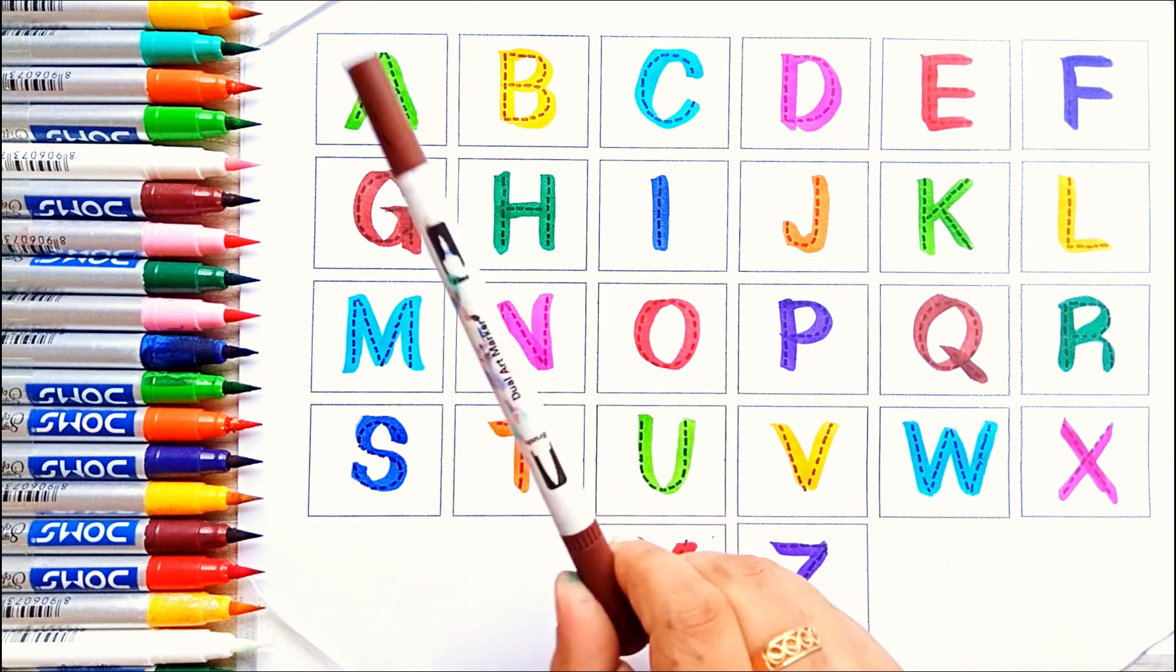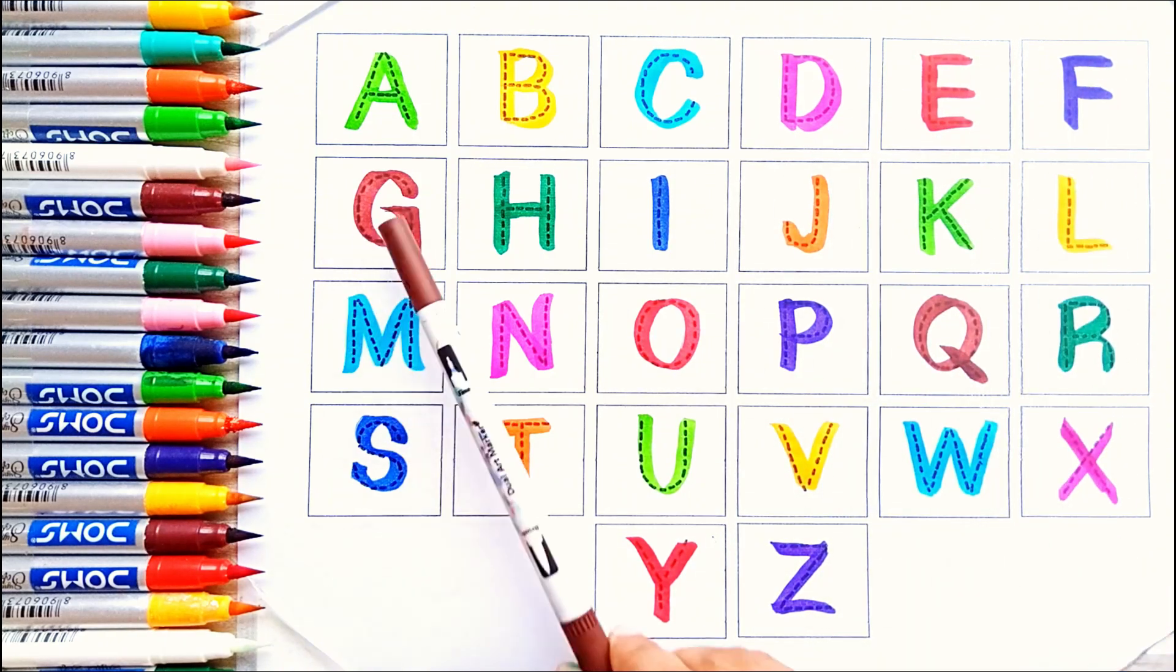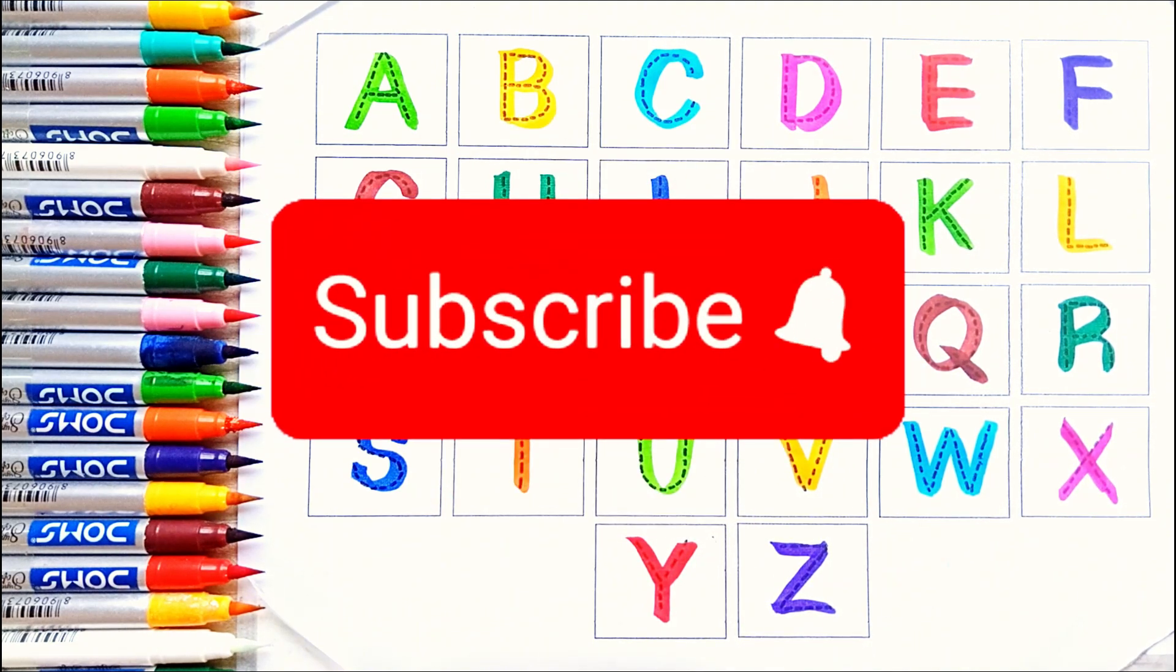Let's sing. Now I know my ABCs. Next time won't you sing with me. A, B, C, D, E, F, G, H, I, J, K, L, M, N, O, P, Q, R, S, T, U, V, W, X, Y, Z. Please do like and subscribe and share it with us on our next video.